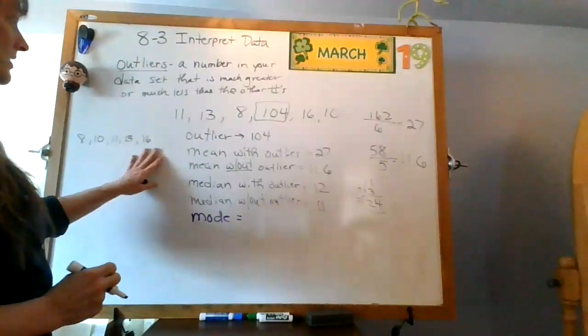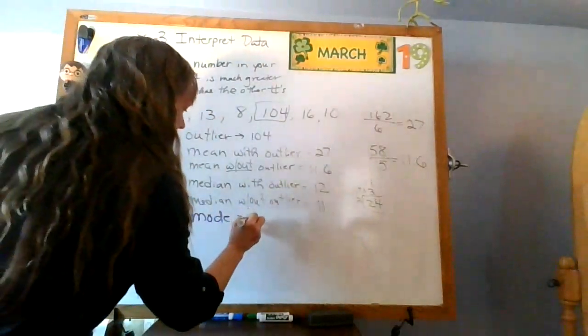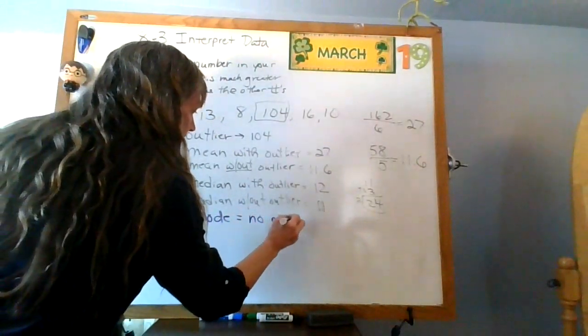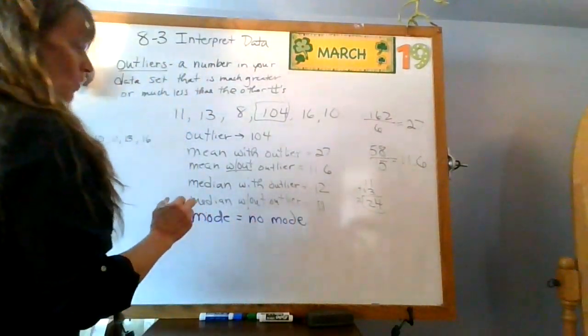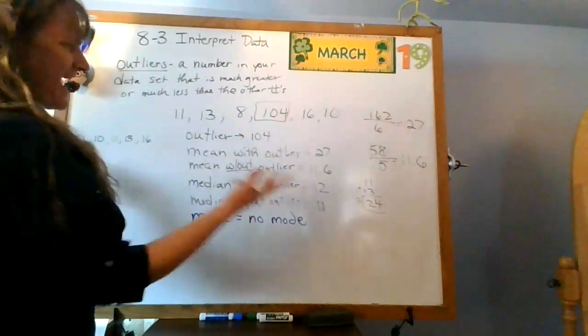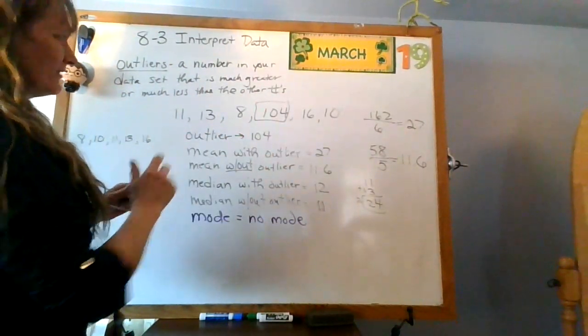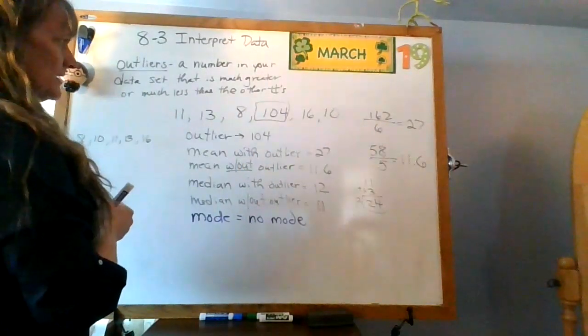Okay. What about the mode? Do I have a mode here? I don't see anything repeated. No mode. And that doesn't seem to matter if I have an outlier or not, right? I don't see anything repeated there.